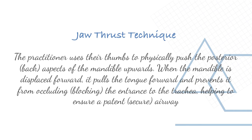In the jaw thrust technique, the practitioner uses their thumbs to physically push the posterior aspects of the mandible upward. When the mandible is displaced forward, it pulls the tongue forward and prevents it from occluding the entrance to the trachea, helping to ensure a patent airway.